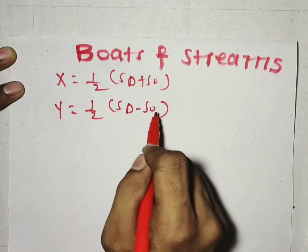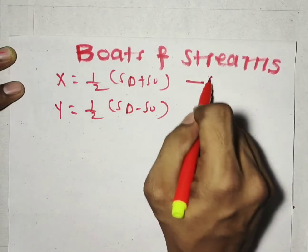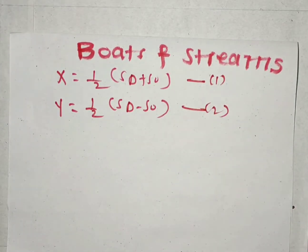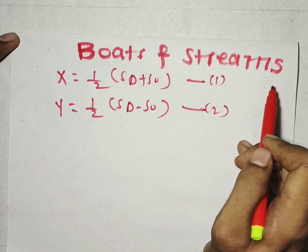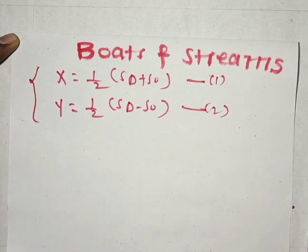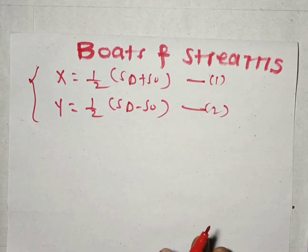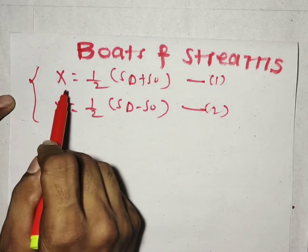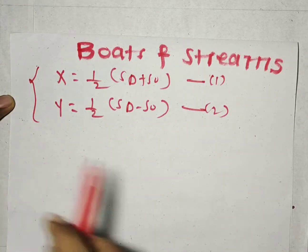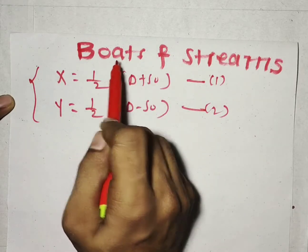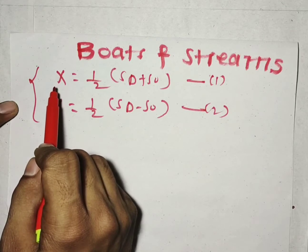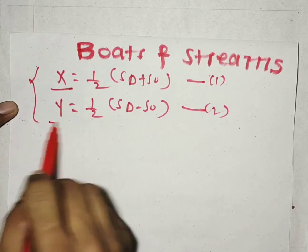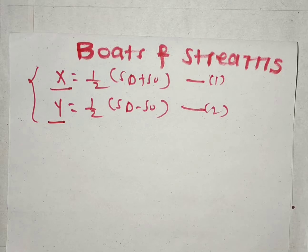SD is the downstream speed and SU is the upstream speed. If you don't know how this formula was derived, you can watch my first video on boats and streams — Boats and Streams Part 1. In most questions on boats and streams, we have to calculate x, the speed of the boat in still water, and y, the velocity of the water. These two formulas are very important.